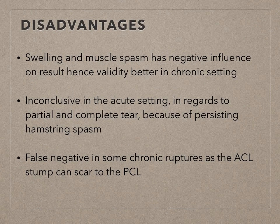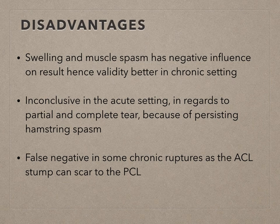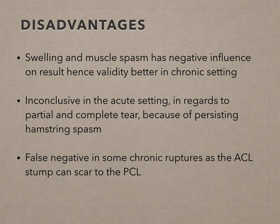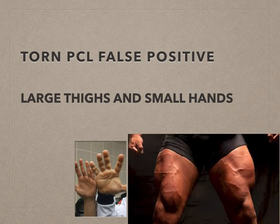There are certain disadvantages. Sweating and muscle spasm have a negative influence on results; hence validity is better in the chronic setting. It is inconclusive in the acute setting regarding partial and complete tear because of persisting hamstring spasm. There is also a false negative in some chronic ruptures, as the ACL stump can scar to the PCL. It should be noted that in patients with a torn PCL, the test may result in a false positive.